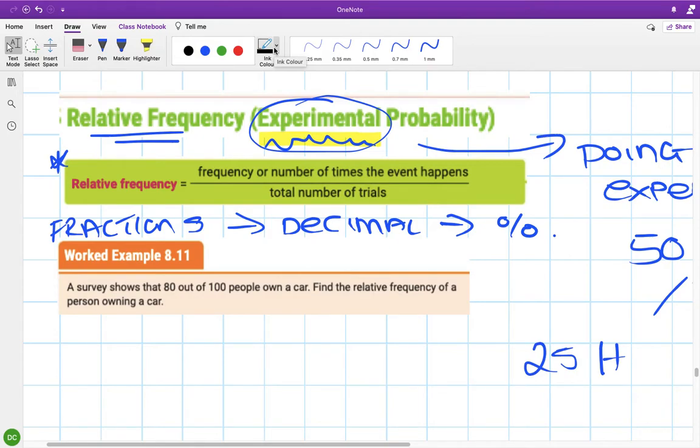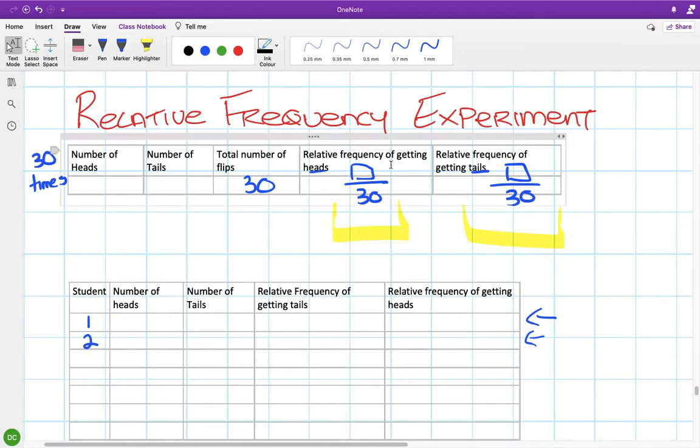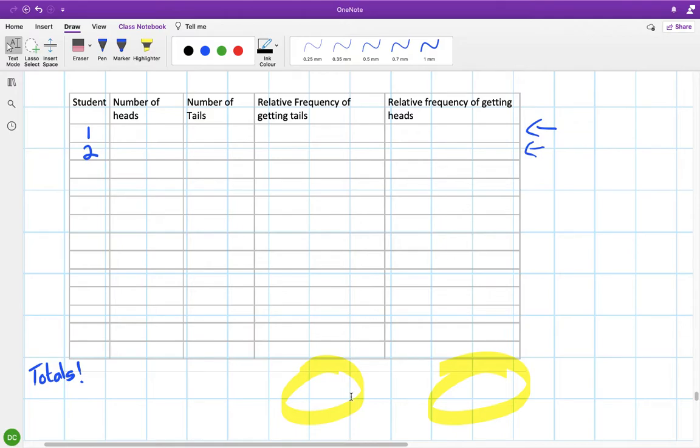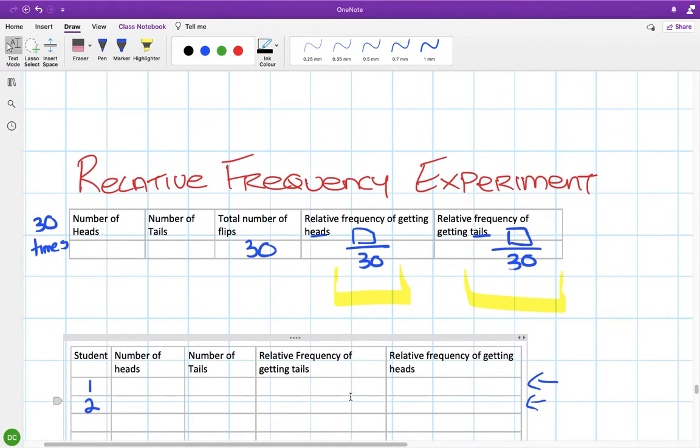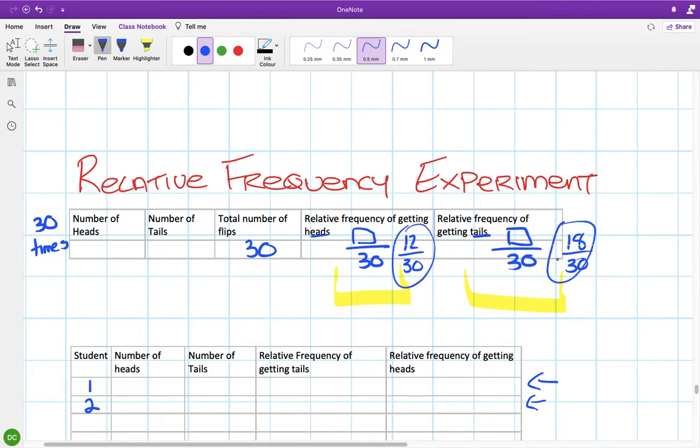So the other day you did the relative frequency experiment. I asked you to do 30 flips of a coin, then combine all your 30 flips and see what kind of totals you got. The point of this was that relative frequency is based on an experiment. When you flip a coin you expect to get heads half the time and tails the other half, but what you notice when you flip the coin is that doesn't necessarily happen. You might have got like 12 heads out of 30 flips and 18 tails, so not exactly half and half because in an actual experiment it doesn't always fall half and half like that.